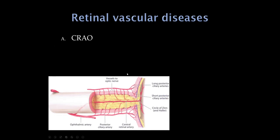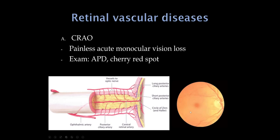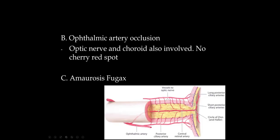Let's start with central retinal artery occlusion. The central retinal artery comes off the ophthalmic artery. These patients have painless, sudden onset visual loss in one eye. You will find an afferent pupillary defect, and the classic finding is a cherry red spot. If the occlusion is more proximal at the ophthalmic artery, the patient will still have visual loss but won't have the cherry red spot.